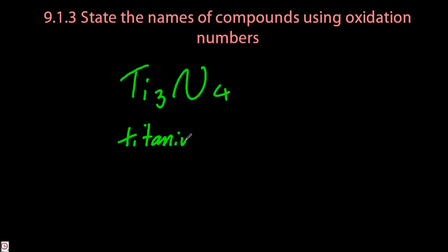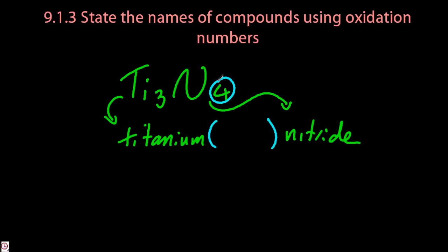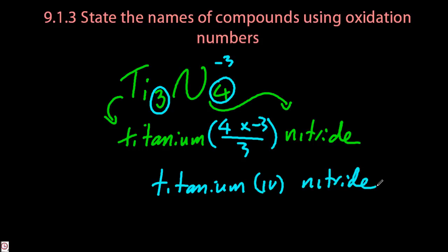Ti3N4, so Ti is titanium, N is nitrogen, but it's always got to end in -ide, because these are ionic compounds, metal and non-metal, and titanium has variable oxidation numbers, so it must have parentheses. And you can see where the three numbers come from. The -3 is the only tricky one, and that's the charge on the negative ion.